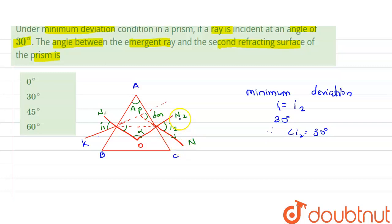That is why angle between the prism surface and emergent ray will be equal to 90 minus I2, which is equal to 90 degrees minus 30 degrees, and we get this as 60 degrees.